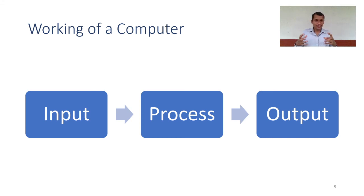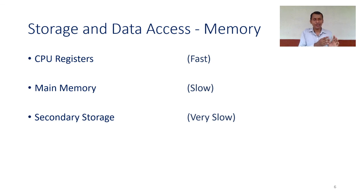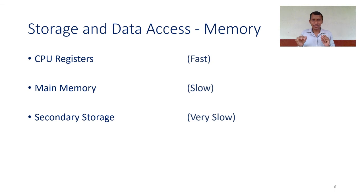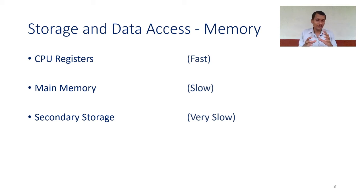To do this processing, we have to keep our information somewhere. We can keep information in CPU registers, in main memory, or in secondary storage. Each location has its own advantage and limitation. CPU registers are very fast but very limited in size. Main memory is quite large but a bit slower than CPU registers. Secondary storage is very large but very slow. Considering these trade-offs, we must utilize these different storage areas to make our computations faster and efficient.